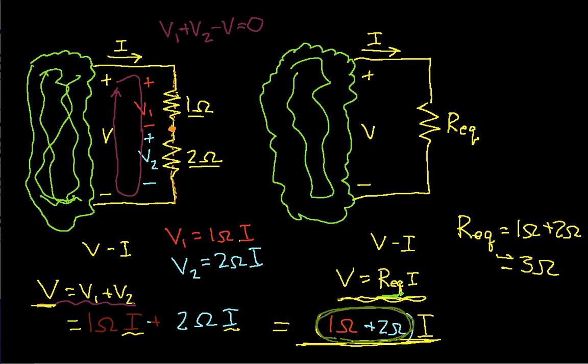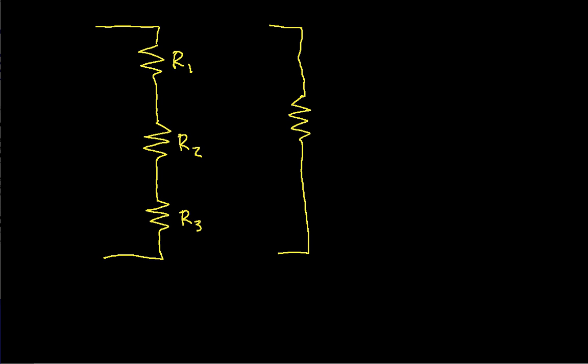So if I want to extend this, suppose that I have three resistors in series. I won't go through the derivation. Let's call this guy R1, R2, and R3. It's easy to show using a derivation that's very similar to what we did for two resistors that R equivalent is just the sum of R1 plus R2 plus R3.